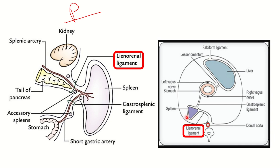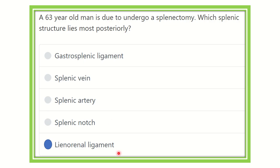On the other hand, we can see the lienorenal ligament, which attaches the spleen to the kidney. So the most posterior structure related to the spleen is the lienorenal ligament. Other structures such as the vessels, tail of the pancreas, and gastrosplenic ligament lie more anteriorly. Our final answer is the lienorenal ligament, which is located most posteriorly.